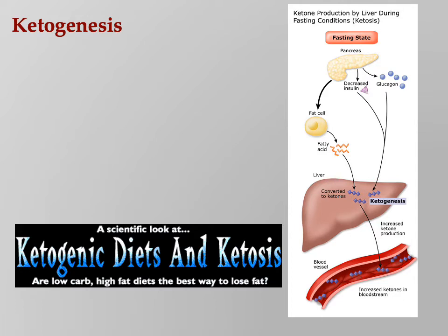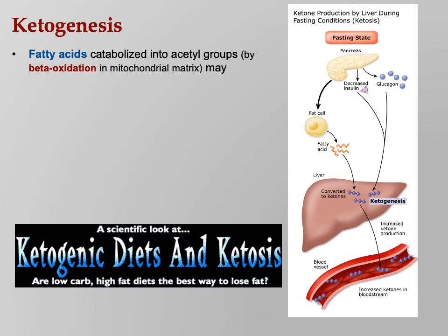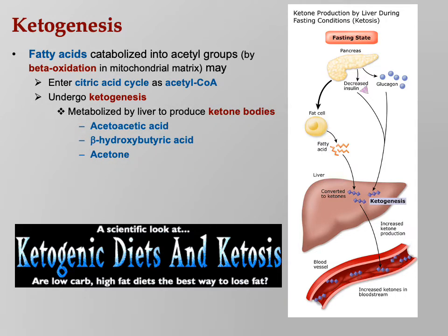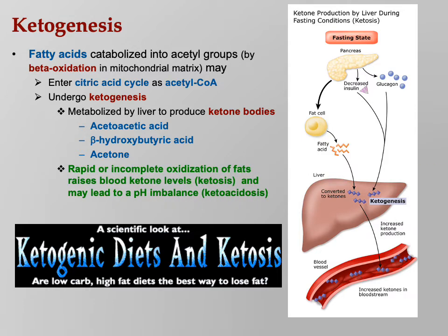Ketogenesis means making ketones. Fatty acids are catabolized into acetyl groups by beta oxidation in the mitochondrial matrix. They can enter the citric acid cycle as acetyl-CoA, and they can undergo ketogenesis — metabolized by the liver to produce ketone bodies. Ketone bodies include acetoacetic acid, beta-hydroxybutyric acid, and acetone. Ketone bodies are not bad — you can use them to produce energy. However, rapid or incomplete oxidation of fats raises blood ketone levels, which is called ketosis.